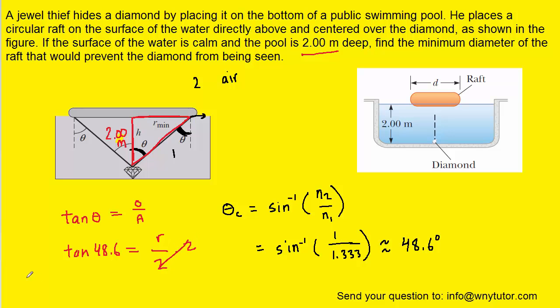So we'll multiply both sides of this equation by 2 and that will allow us to solve for the radius which turns out to be roughly 2.27 but just be careful we don't want the radius of the raft we want the diameter.